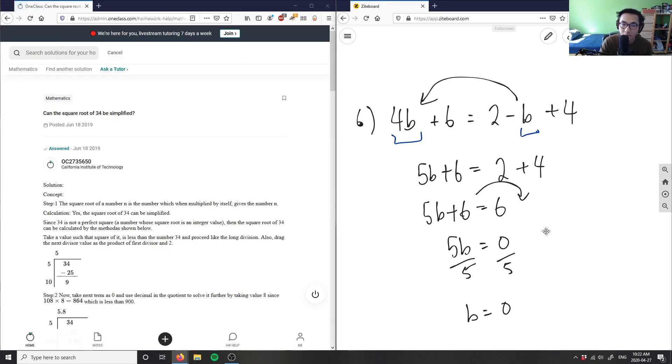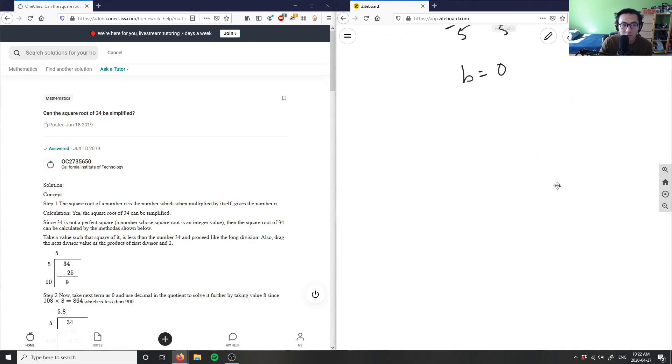Okay, let's look at number 7 here. Can the square root of 34 be simplified? So square root of 34, again we have an even number. What we can do is we can take out another even number. We're always taking out two here.